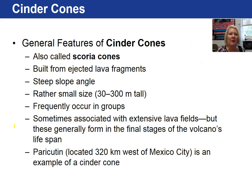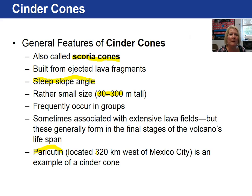Cinder cones are the next type of volcano. Sometimes they are called scoria cones. With a cinder cone, it is built up from ejected lava fragments that stick to the side of the volcano, making the angle of the slope quite steep. However, they are not very tall — about 300 to 330 meters. They often occur in fields or in groups. Paracutin, located west of Mexico City, is an example of a cinder cone.